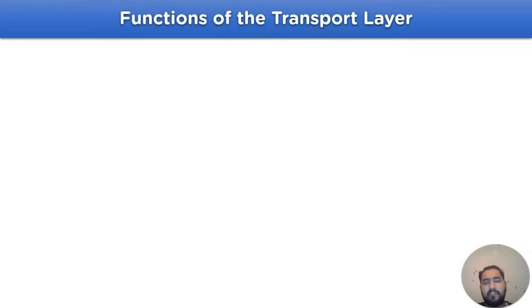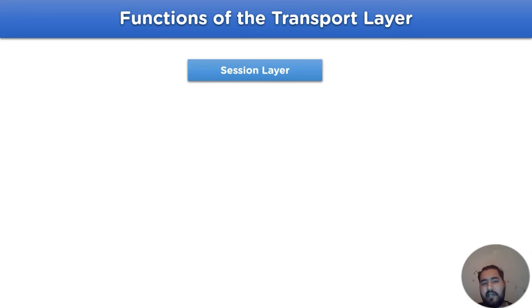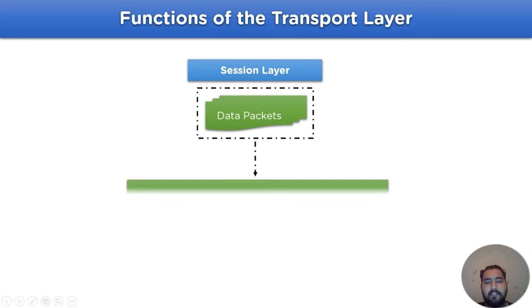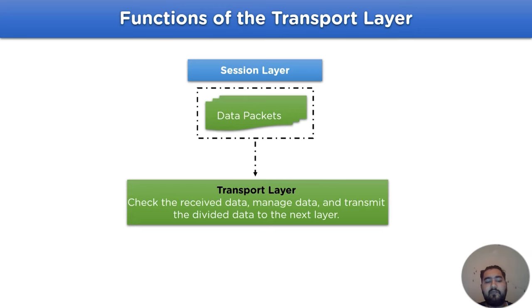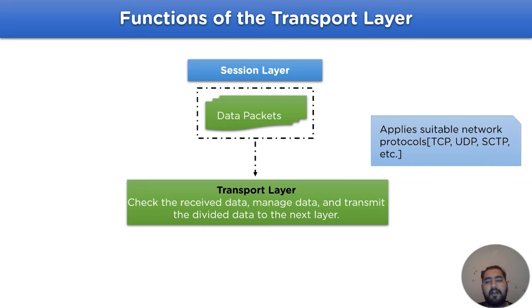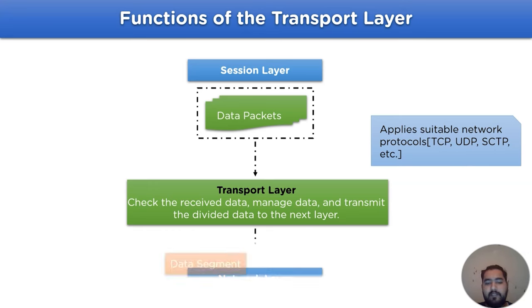Let's take a look at the data flow that occurs between the multiple layers of the OSI model and the transport layer. The session layer shares data packets over to the transport layer where they are checked for various errors or corruption. Data is then transmitted into smaller units over to the next layer. Multiple protocols are applied in the transport layer, for example TCP, UDP, and SCTP, and then these data segments are shared over to the bottom layer.